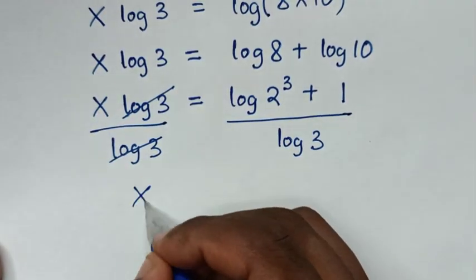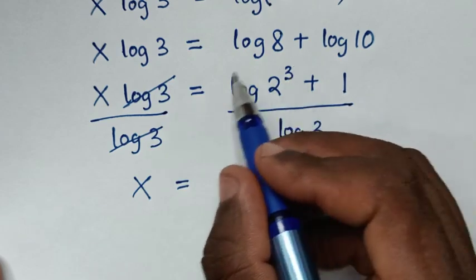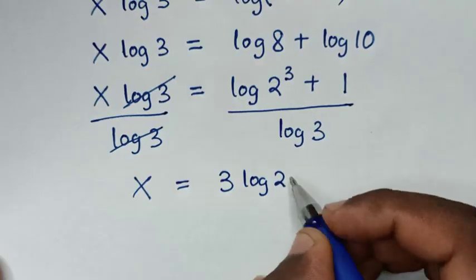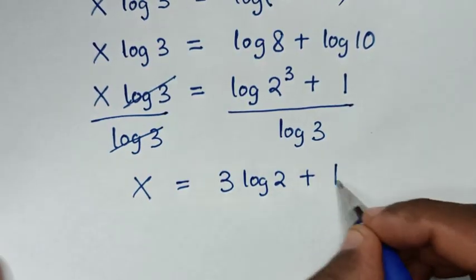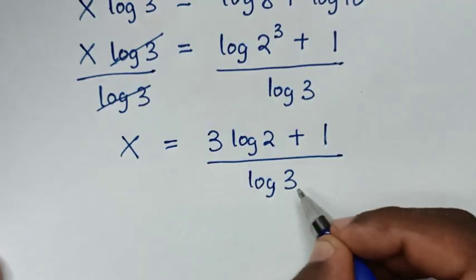Then it will be x is equal to log of 2 power of 3, this power of 3 will move to the base. So it will be 3 log of 2, plus 1, over log of 3.